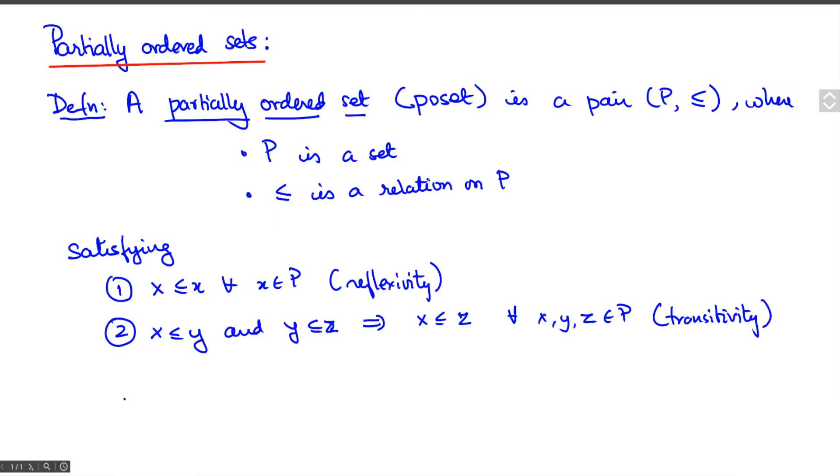And the third and most important axiom is that if x ≤ y and y ≤ x, then x = y for all x, y. This axiom is called anti-symmetry.